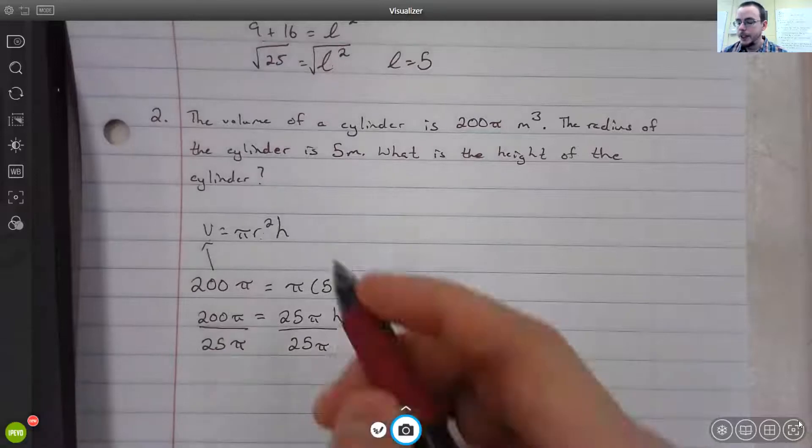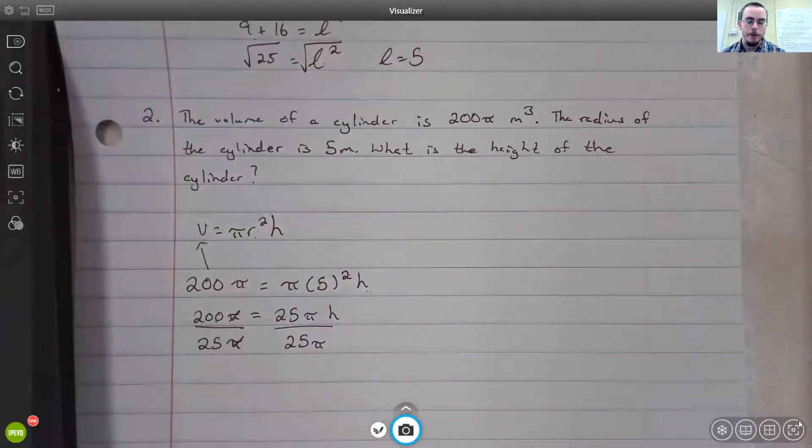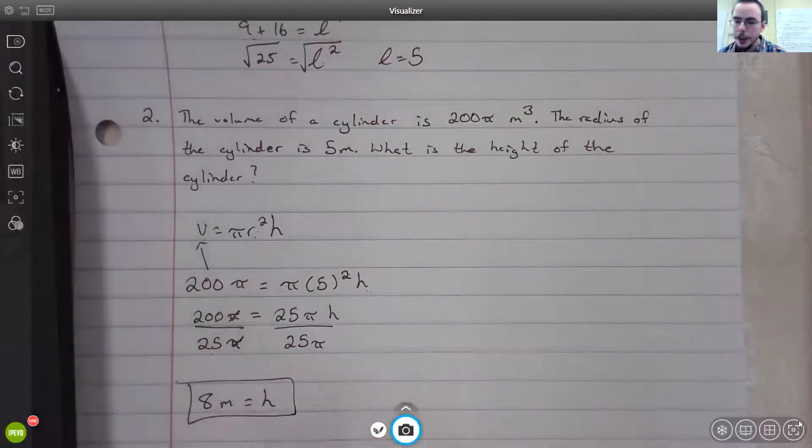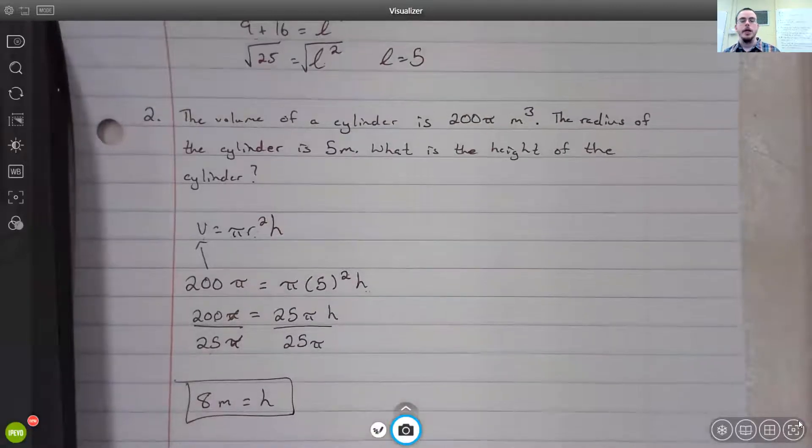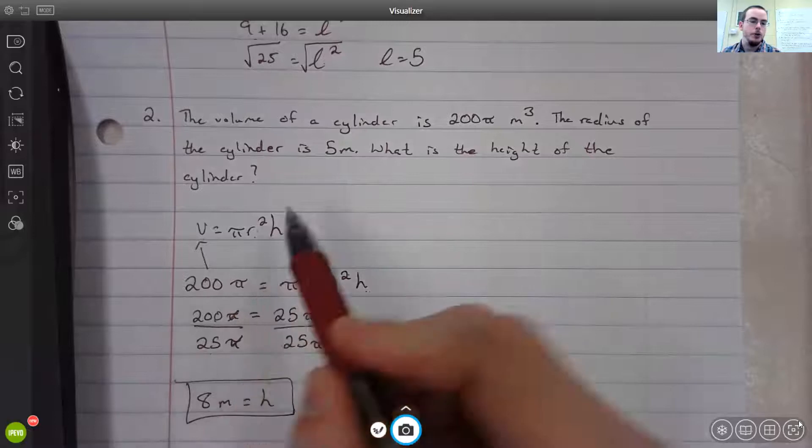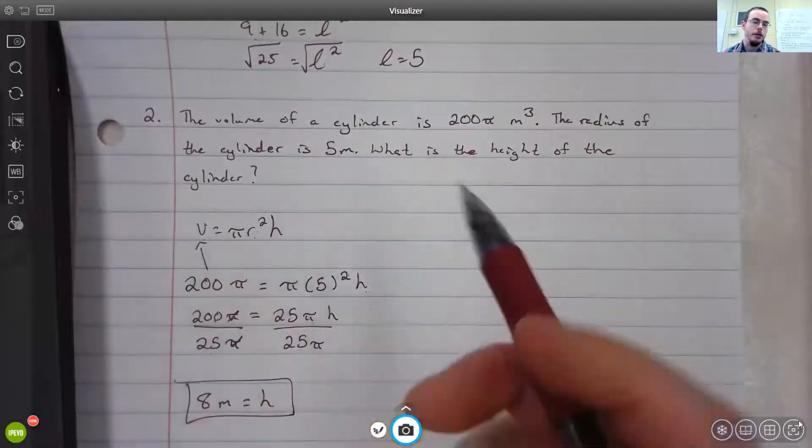On the left side, the π's cancel, and if you take 200 divided by 25, you get that your height is equal to 8 meters. And of course, you could plug that back in to your original formula with our radius, so you'd have 5² times 8, which would be 200, and then π.